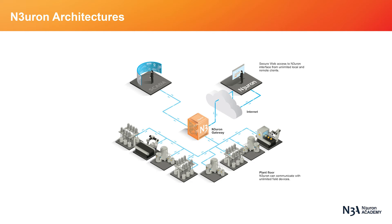Companies can create any system architecture with ease using Neuron software. Neuron can be deployed to multiple plants, each with a unique need for the software. The way in which Neuron's node or nodes are set up in the industrial plant is what we call the Neuron system architecture.